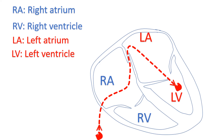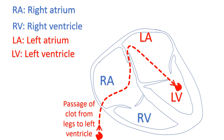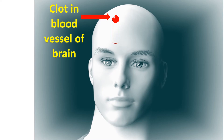But small clots from the leg veins or abdomen can occasionally pass across the PFO to the left atrium — a risky situation. The clot can move from the left atrium to the left ventricle and then to the aorta. The left ventricle is the lower muscular chamber which pumps blood to the whole body, and the aorta is the large blood vessel arising from it. From the aorta, the clot can move to any part of the circulation. If it gets lodged in a blood vessel of the brain and blocks it, a stroke with paralysis may occur.